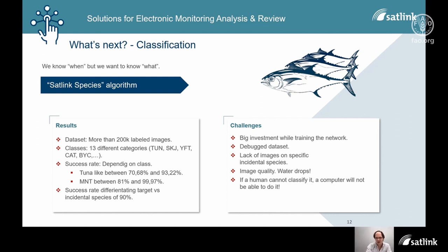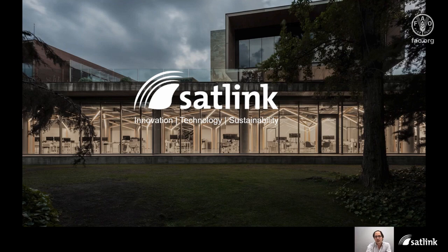One key insight: if a human cannot classify it, a computer will not be able to do it either. This may sound funny, but it is what happens. We cannot imagine a neural network as a magical thing — it is trained with our knowledge. So if we cannot classify it, the computer will not be able to do it. I hope this presentation was useful, and I'm happy to clarify any questions. Thank you very much.